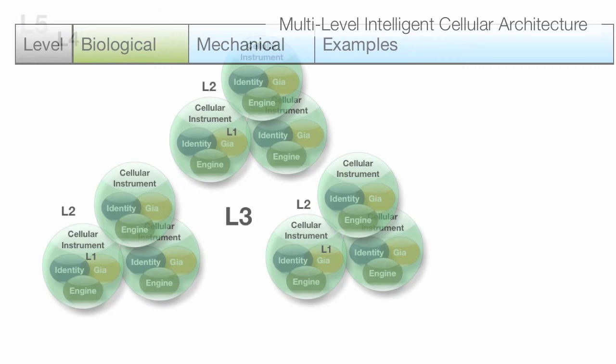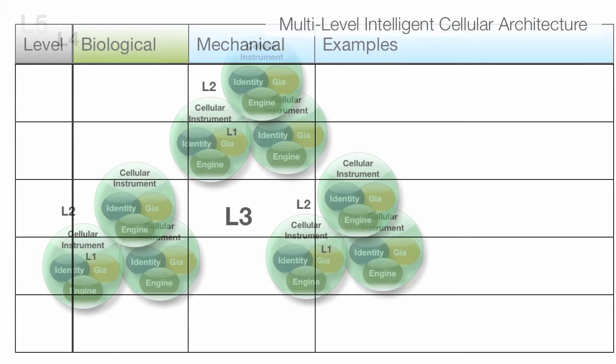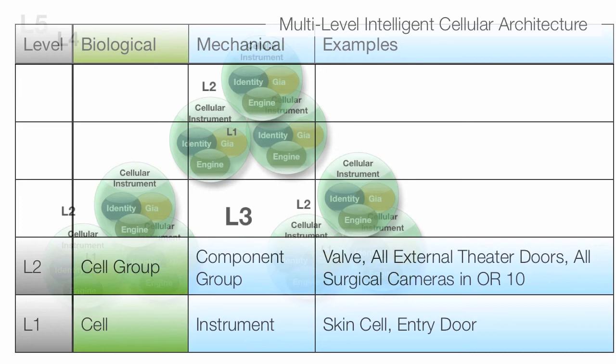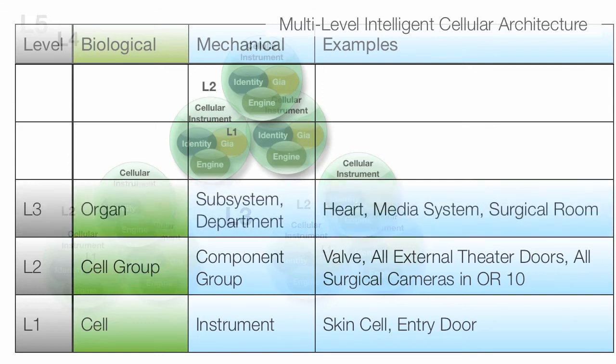So, just to quickly go through that again, because this is kind of complicated. Levels 1 through 5, level 1 is an EMMA entity. It's based on that EMMA architecture. And here we call it the cell and the instrument. And it could be a skin cell on the biotech world or an entry door controller that's on the mechatech side. And a cell group, so if you've got all the doors together or all the cells in a valve in the heart, that's that level 2. And level 3, you've got different valve and different components of the heart all coming together to create this complex entity.